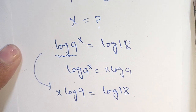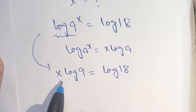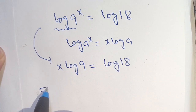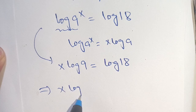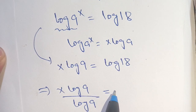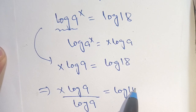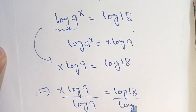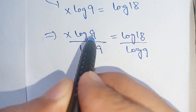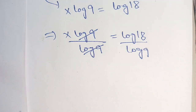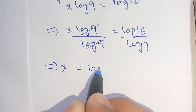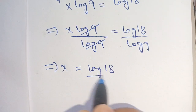In the next step, dividing both sides by log of 9, we get x times log of 9 divided by log of 9 is equal to log of 18 divided by log of 9. We can cancel out log of 9 on the left side, which gives us x is equal to log of 18 divided by log of 9.